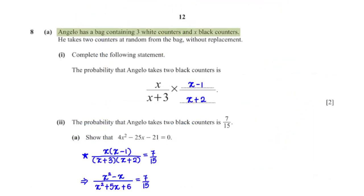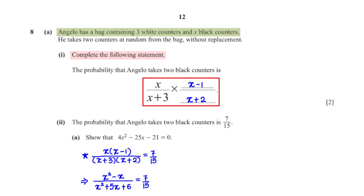Angelo has a bag containing 3 white counters and x black counters. He takes 2 counters at random without replacement. Complete the statement: the probability that Angelo takes 2 black counters is x over (x + 3) times what? The probability the second counter is black — after not replacing the first — is (x minus 1) divided by (x + 2).